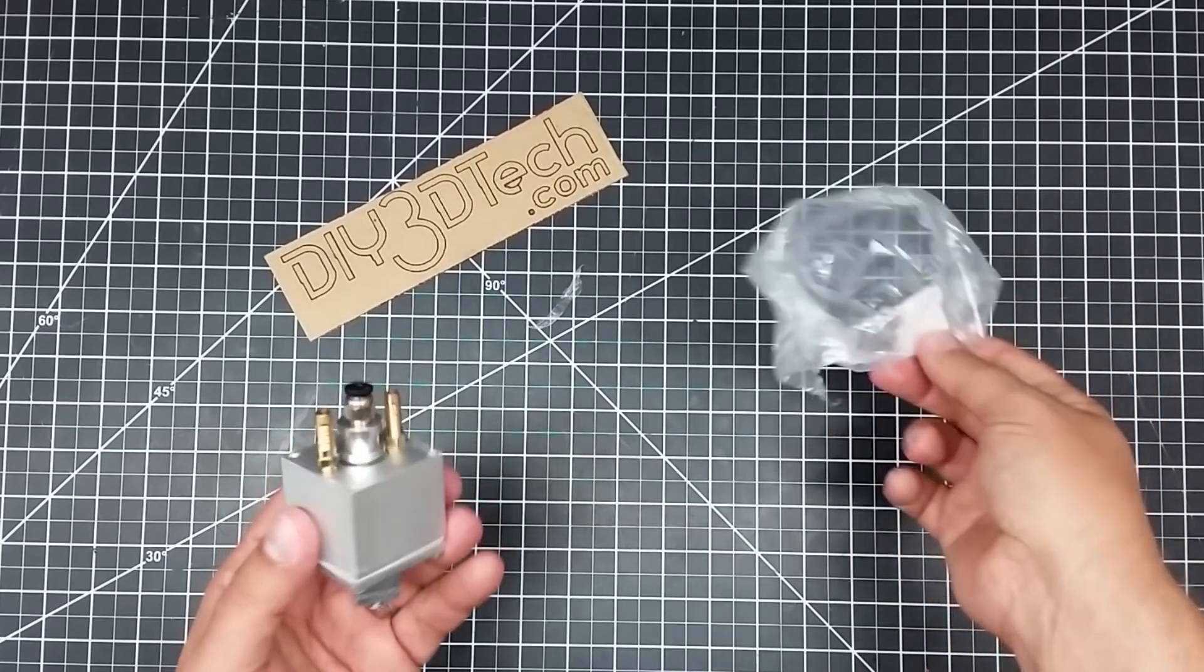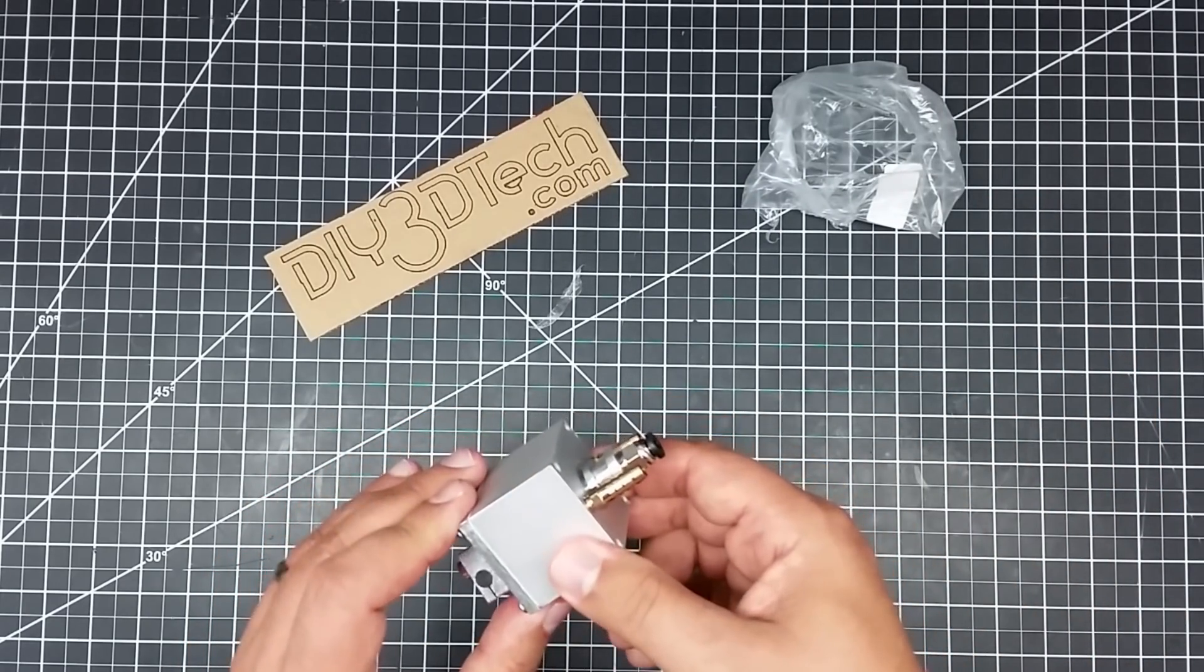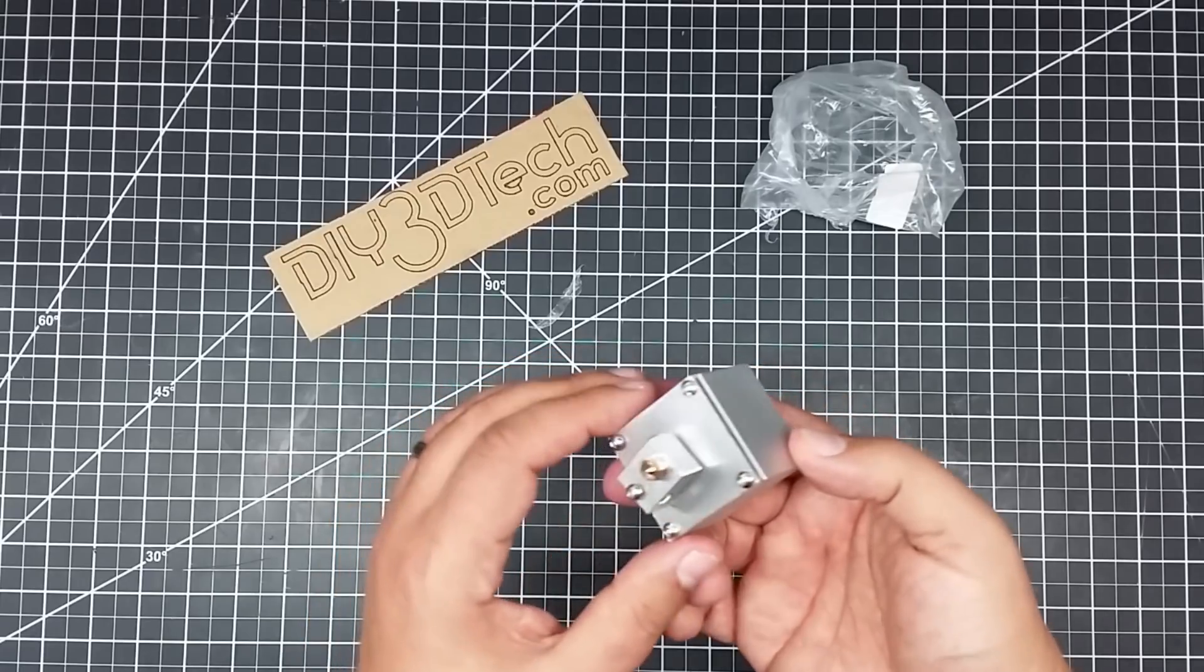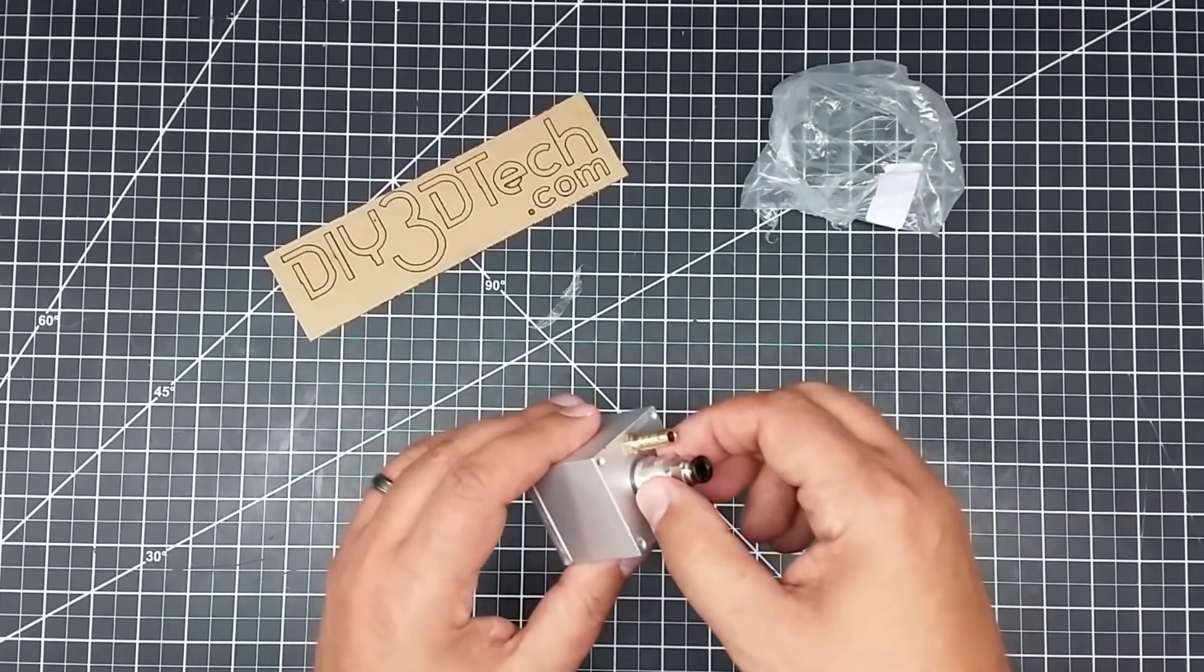So I'm going to open this up. It comes in this kind of little plastic bag. And it looks to be made out of aluminum. Now this is kind of loose, this bottom seal piece here. And this piece is loose.